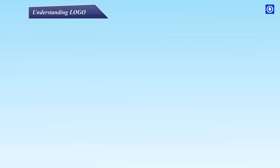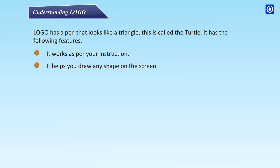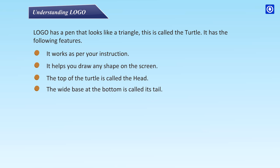Logo has a pen that looks like a triangle — this is called the turtle. It works as per your instruction and helps you draw any shape on the screen. The top of the turtle is called the head, and the wide base at the bottom is called its tail. Wherever the turtle moves, it leaves a trail behind.